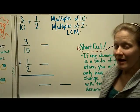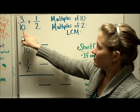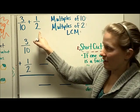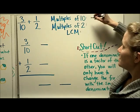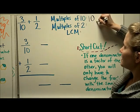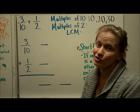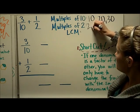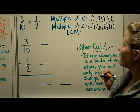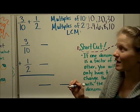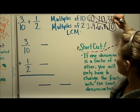Let's go through a few practice problems using the least common multiple. I have three-tenths plus one-half. The first step is to write the multiples of both denominators. Multiples of ten: ten, twenty, thirty. Multiples of two: two, four, six, eight, ten. I already see a common multiple — the least common multiple is ten. Both of them have ten in their list.